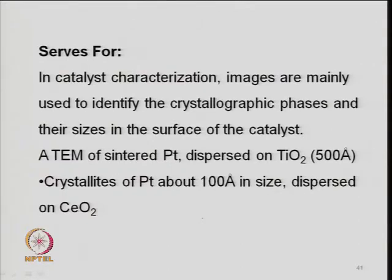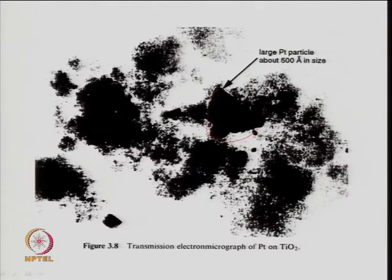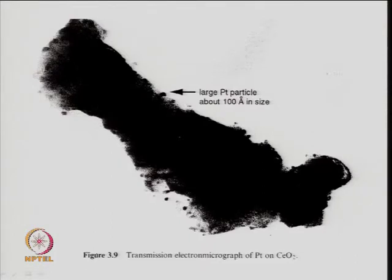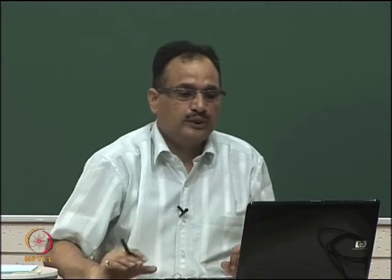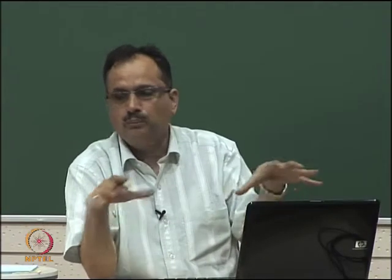Looking at the TEM image: large platinum particles (about 500 Å) on titania appear as agglomerated dark spots. On ceria, platinum crystallites of about 100 Å can be seen. Magnification can be of the order of 100,000 times. You can count the number of particles to find whether they are well dispersed, and you can define the surface area, crystallite size, and crystalline surface area.